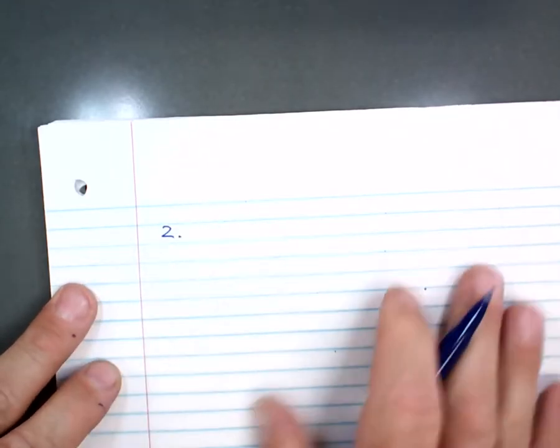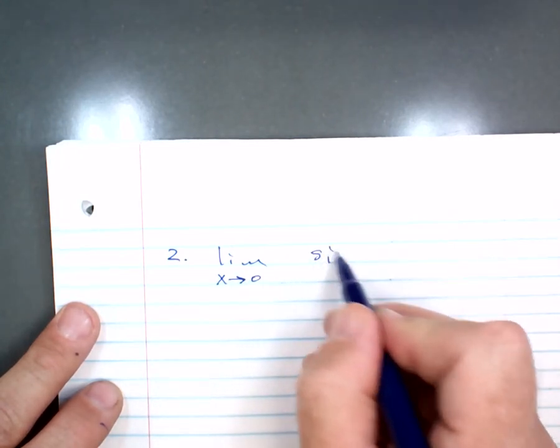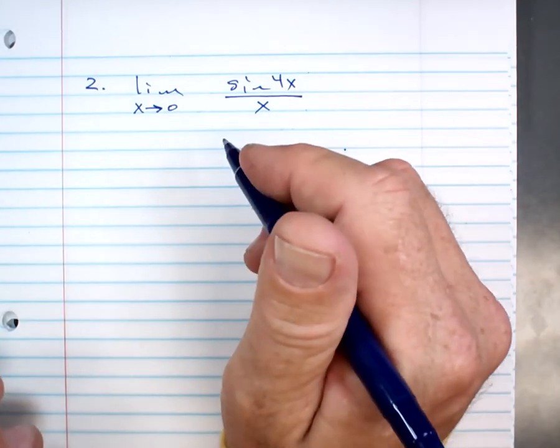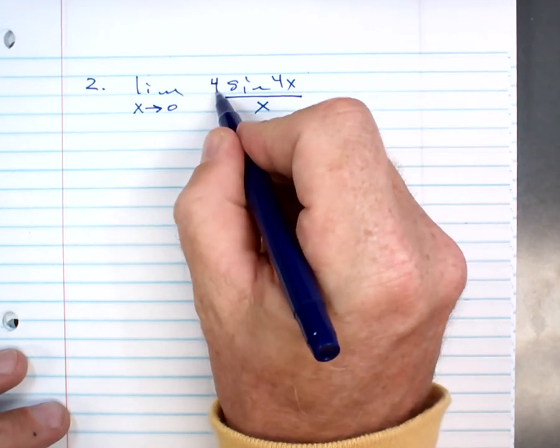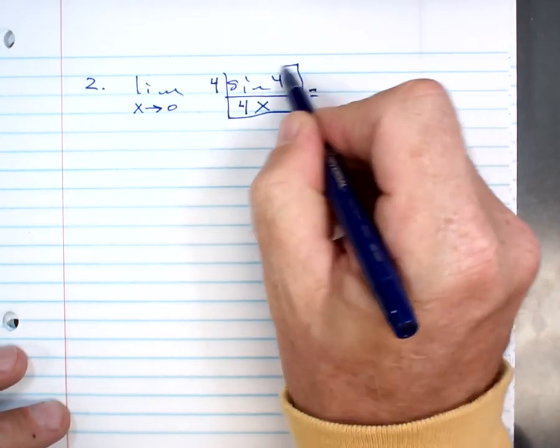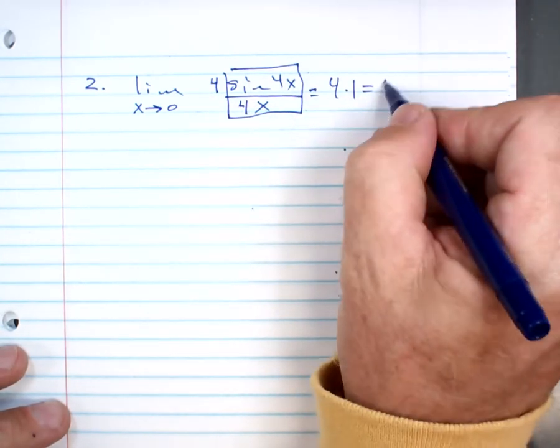Number 2. The limit as x approaches 0 of the sine of 4x over x. Sorry about that. Who can tell me what to do on that? Sophia. Do you see the problem here? Have I done a problem like that before? Do you have any idea? I think you said something and I didn't hear you. 4 over, you want me to put a 4 here? You want me to put a 4 down here? Perfect. What's my answer? What's the limit of this baby? 1, right? What's the limit of that baby? So I got 4 times 1. What's 4 times 1? 4. Perfect. Very good.